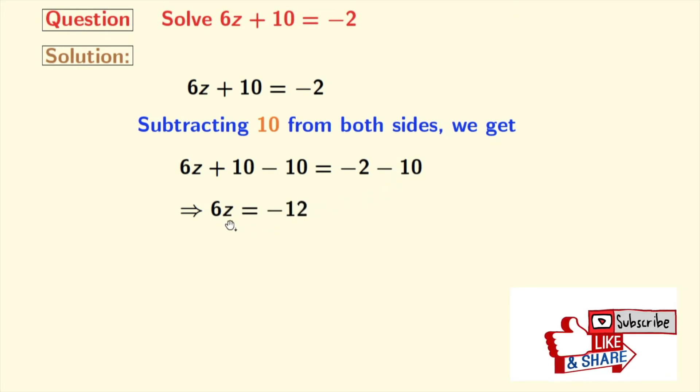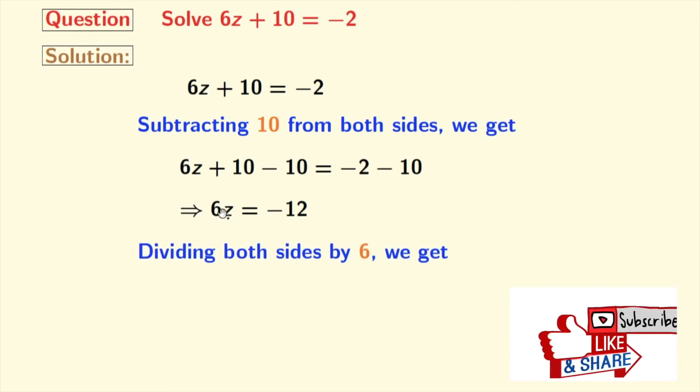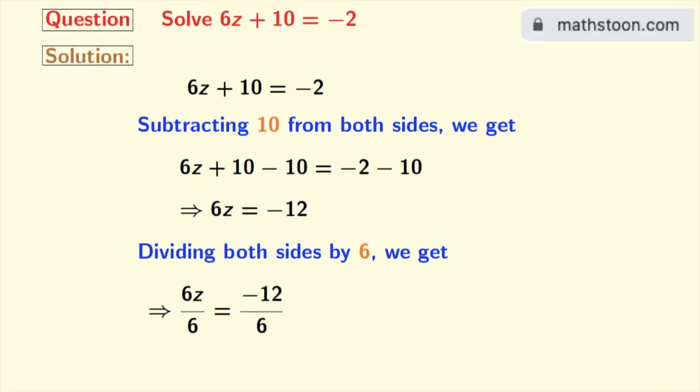Now as the coefficient of z is 6, we will divide both sides by 6. Doing so we get 6z by 6 is equal to minus 12 by 6.